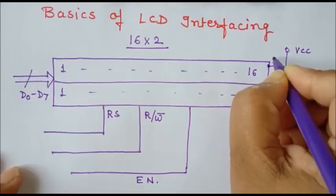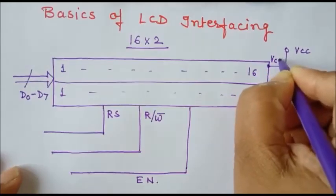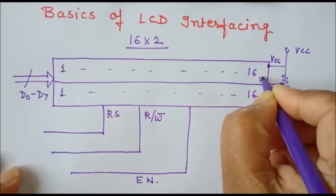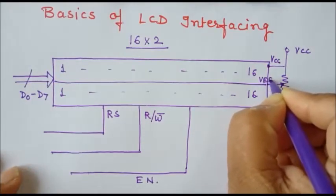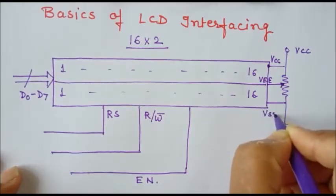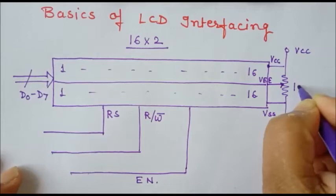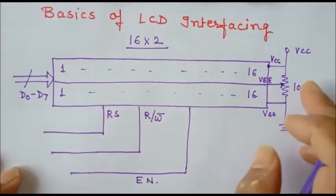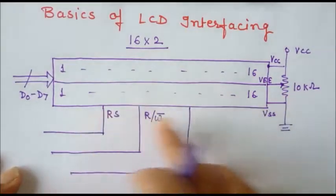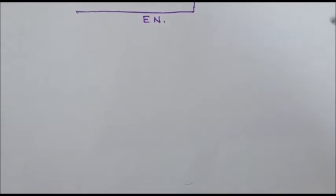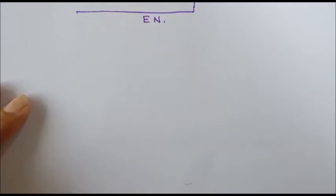To change the brightness of the LCD, a 10 kilohm potentiometer is connected to VCC. It has three terminals: VCC connects to one end, the variable (wiper) terminal of the potentiometer connects to VEE, and the ground terminal connects to VSS. By varying the resistance of this pot, we can vary the brightness of the LCD.